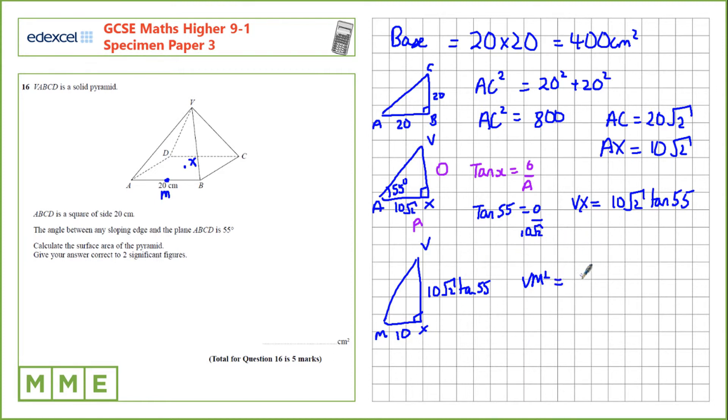So this was 20.2. 20.2 squared plus 10 squared, which is 507.9. And we take the square root to find VM, which is 22.5 approximately.